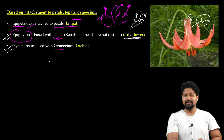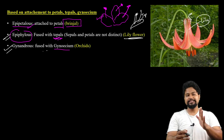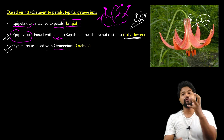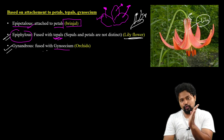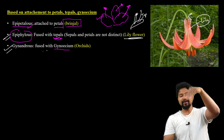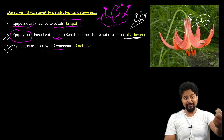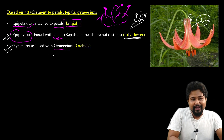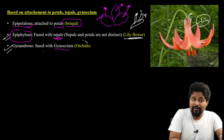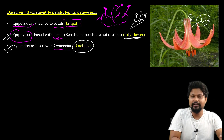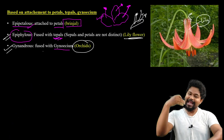Gynandrous means the stamens are fused with the gynoecium — the male reproductive part is fused with the female reproductive part. This will be discussed further in the next class on carpels.